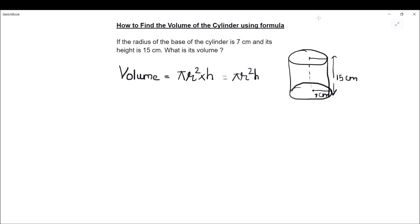The question is: if the radius of the base of the cylinder is 7 cm and its height is 15 cm, what is its volume?